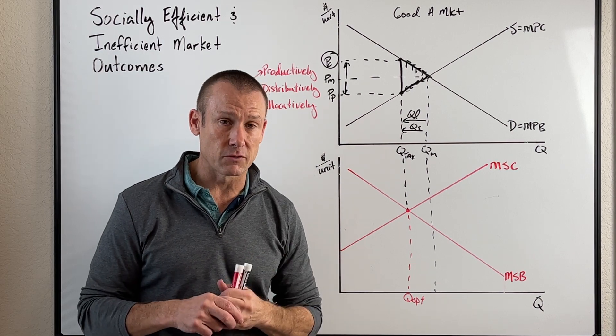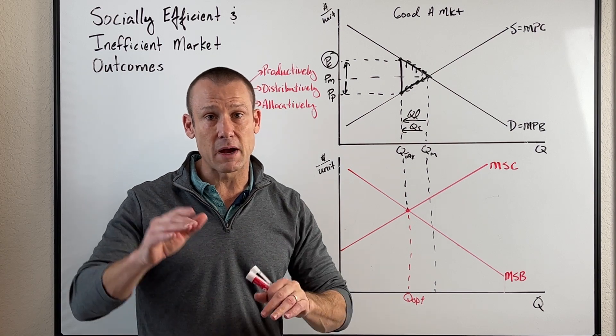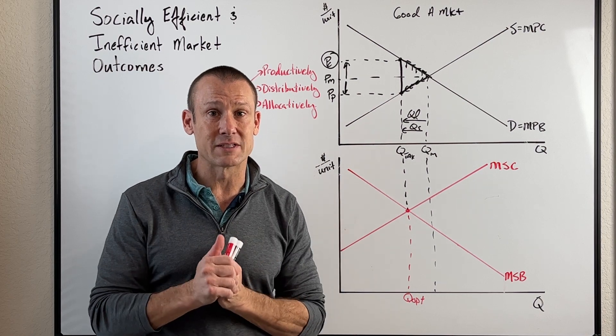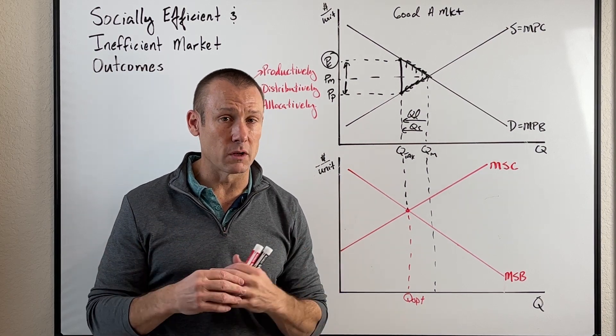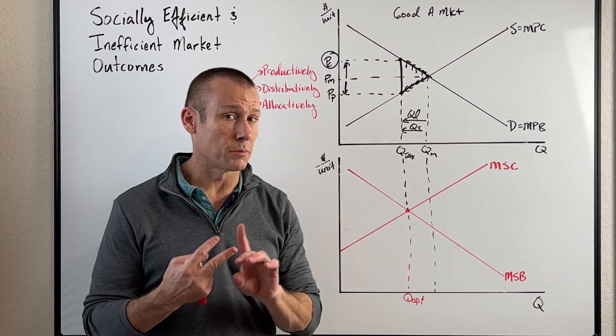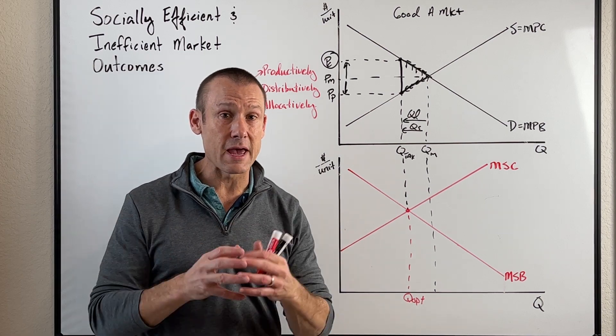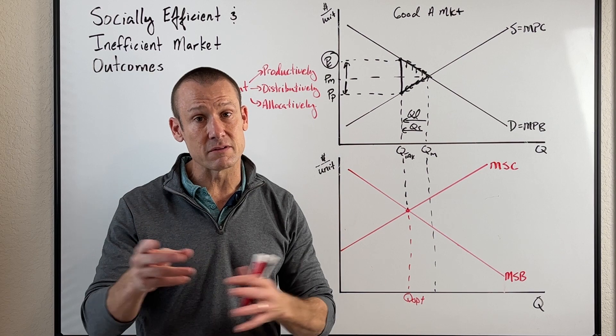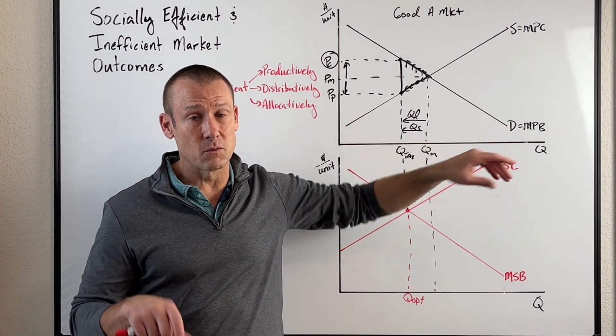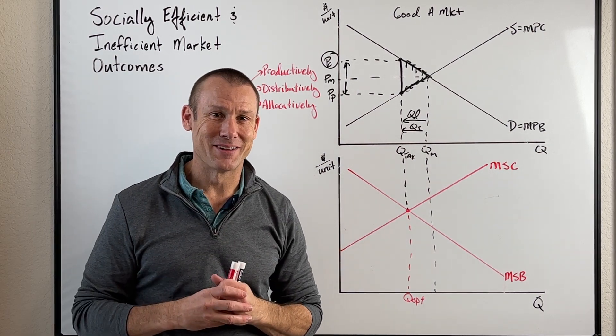And again, income inequality - you got to look at that too, because remember, demand is not just willingness, but also ability to buy the market good. So is our income distribution equitable? Is it fair? And if it's not, well, we're always going to have some problems with those market-based economies when it comes to the needs of society. Anyhow, hope that helped you out. We'll see you in the next video.